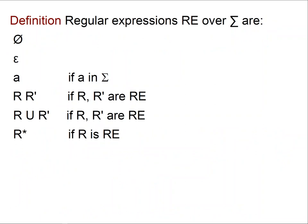Let's be a little more formal. We're going to give an inductive definition of regular expressions — I'll abbreviate regular expressions as RE. An RE over sigma is: the empty set, the epsilon string, the symbol a if a is in sigma, and also r and r' if r and r' are REs — this gives concatenation, the union of r and r', and also the star of r.